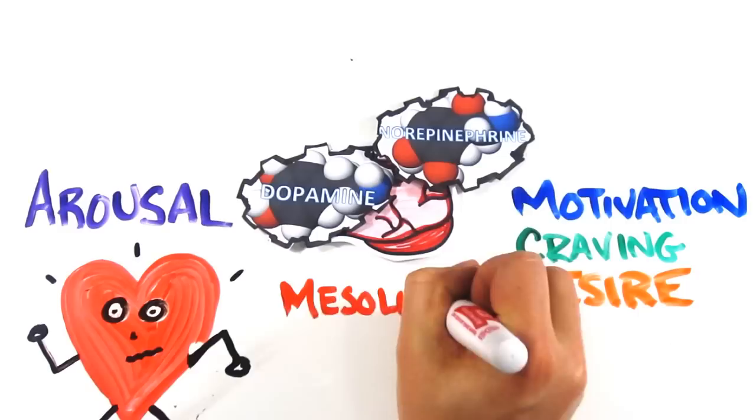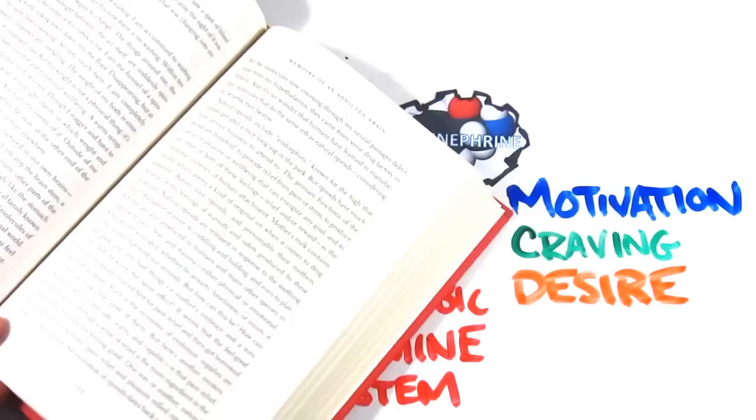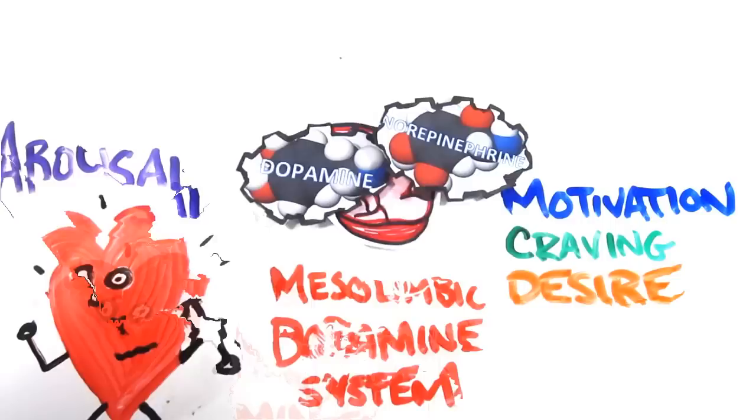The pleasure centers are part of the brain's reward system, the mesolimbic dopamine system. If you stimulate this region while learning, learning becomes much easier because it's pleasurable and perceived as a reward.